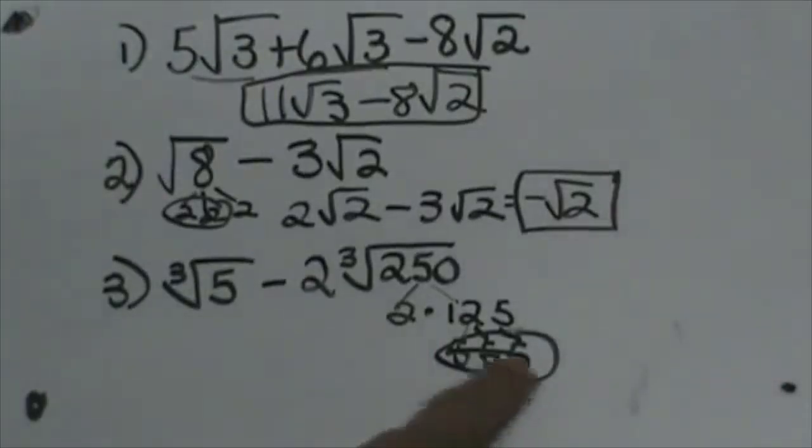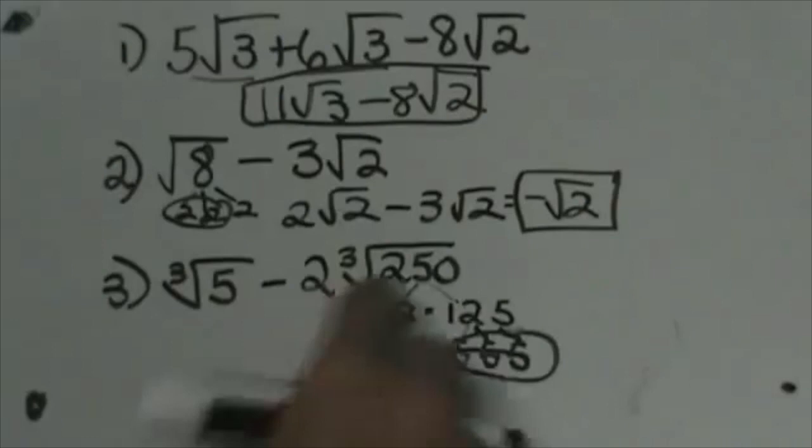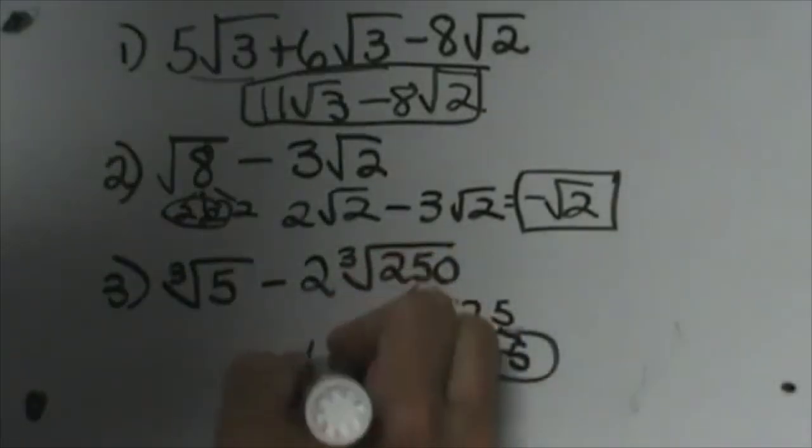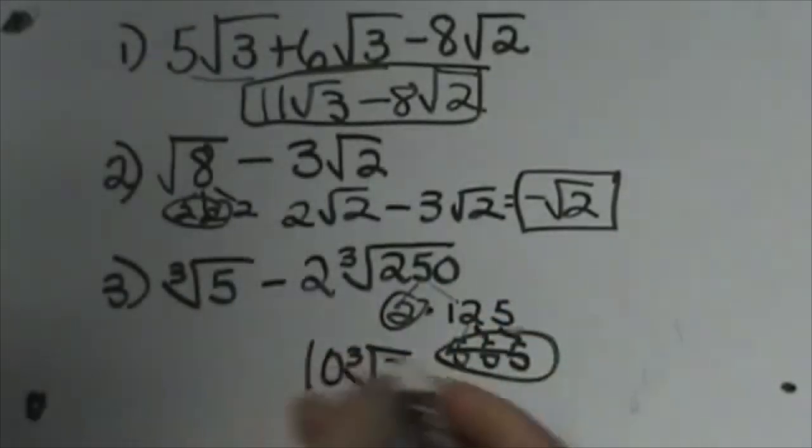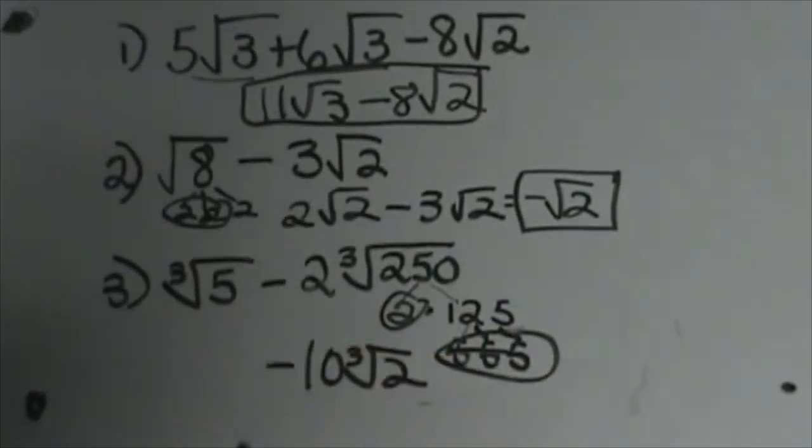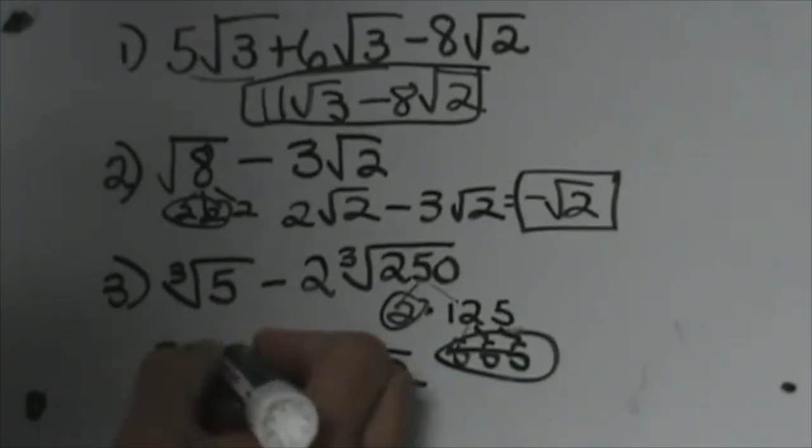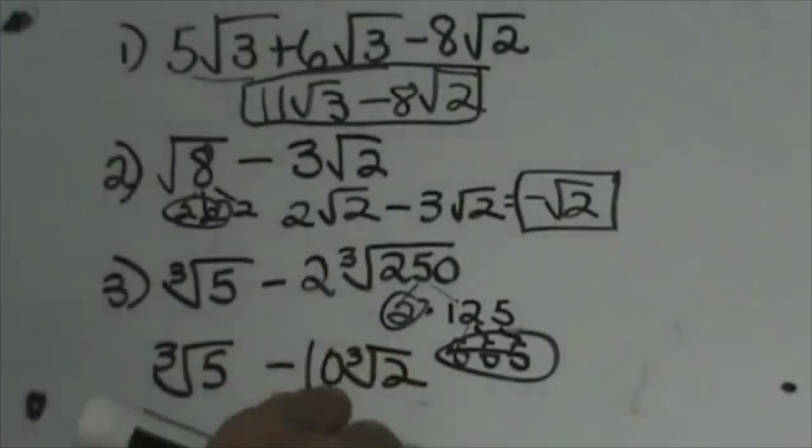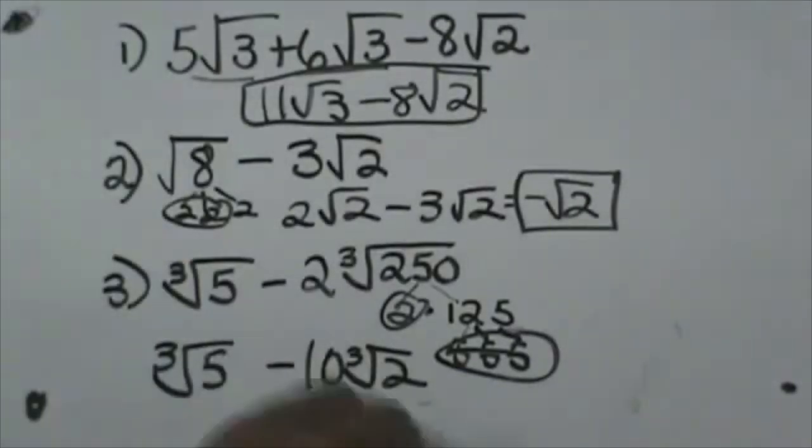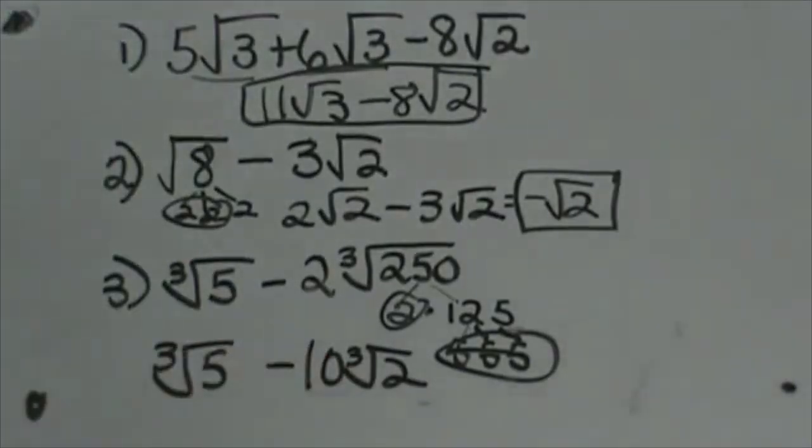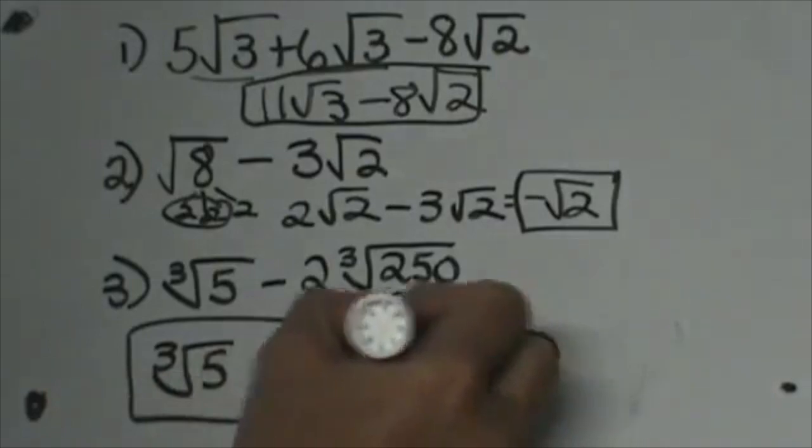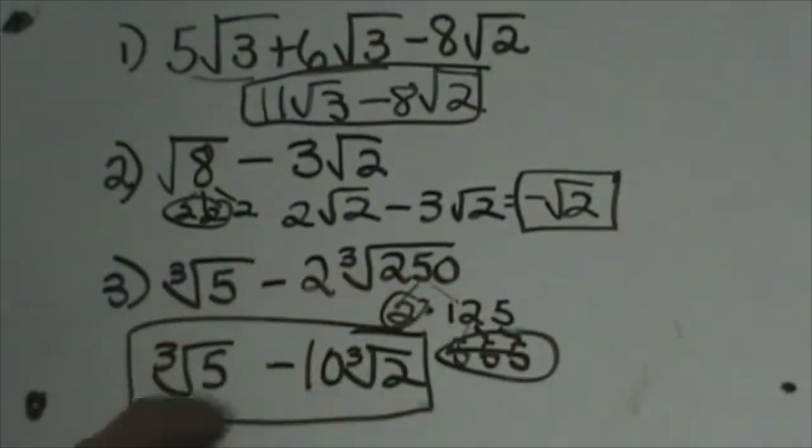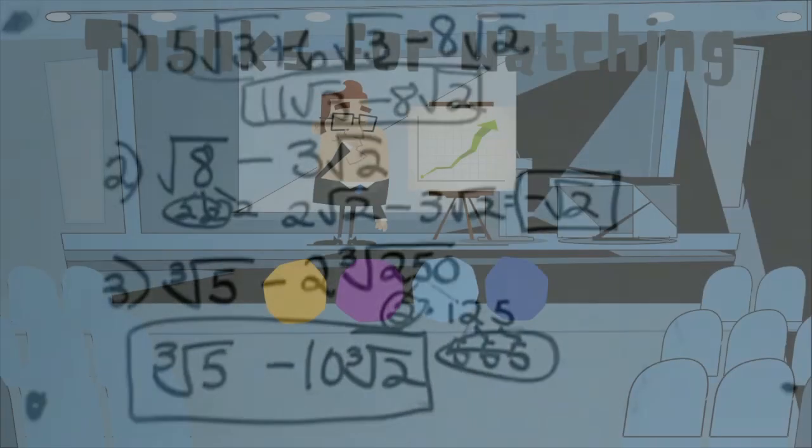There's a group of 3, so we can take out a 5. That's 5 coming out, but we already have a 2 here, so 5 times 2 is 10. We have the 2 left under the radical. So we have ∛5 - 10∛2. Can we combine those because they are both cube roots? No, we can't. This would also have to be ∛5 to combine. So the final answer is ∛5 - 10∛2.